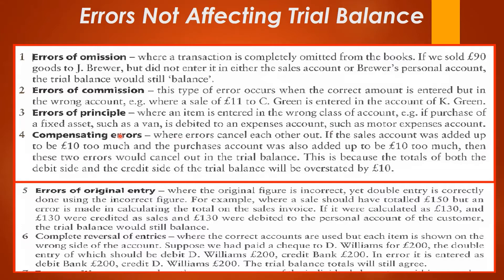Next we have compensating errors, where errors cancel each other out. If the sales account was added up to be ten dollars too much and the purchases account was also added up to be ten dollars too much, these two errors would cancel out in the trial balance — because you are dealing with a credit balance and a debit balance, and the totals of both the debit and credit sides of the trial balance will be overstated by ten.